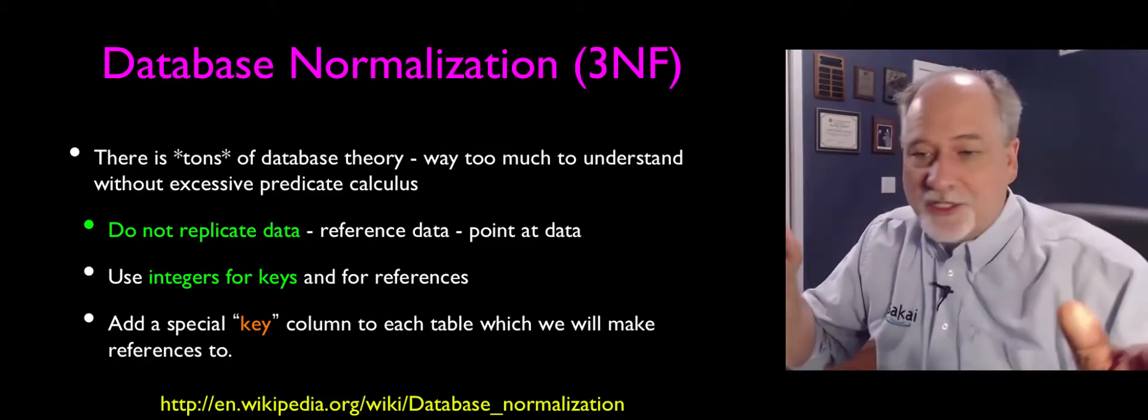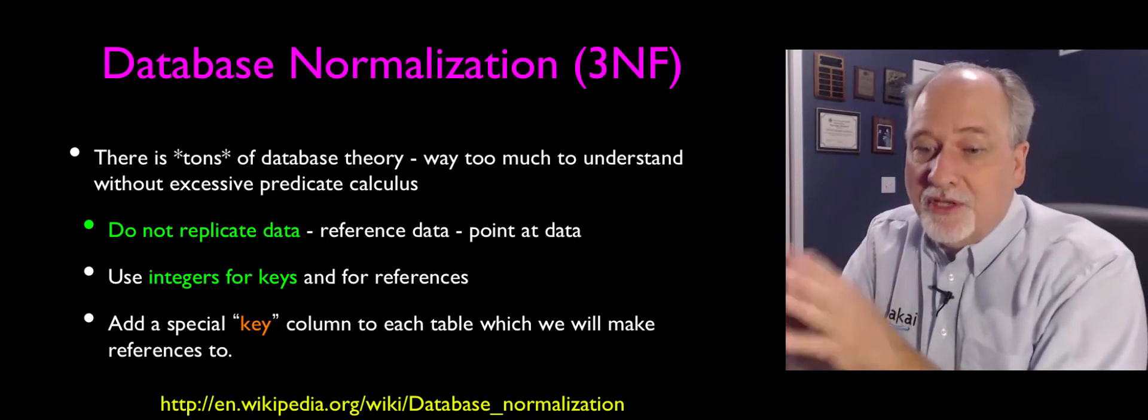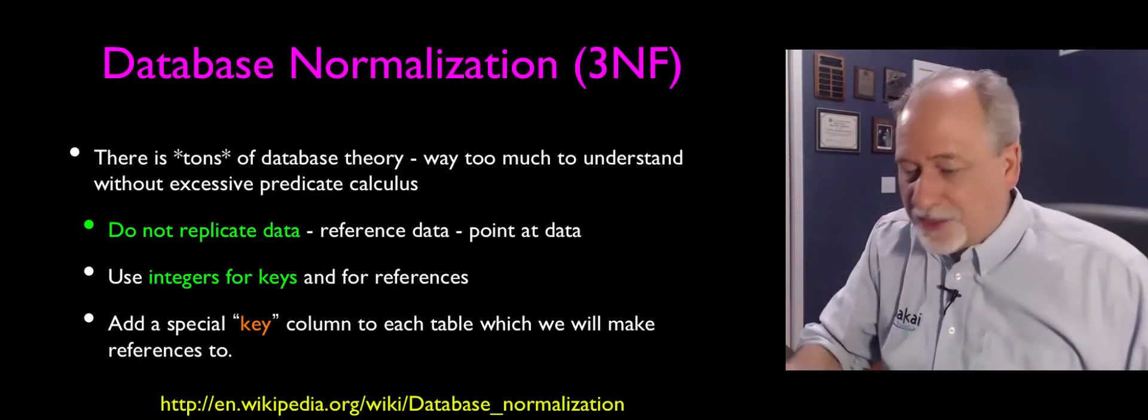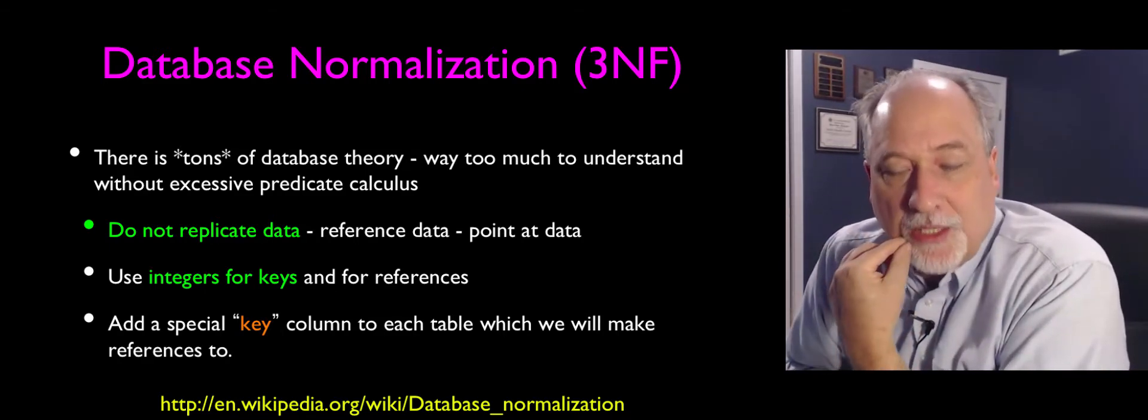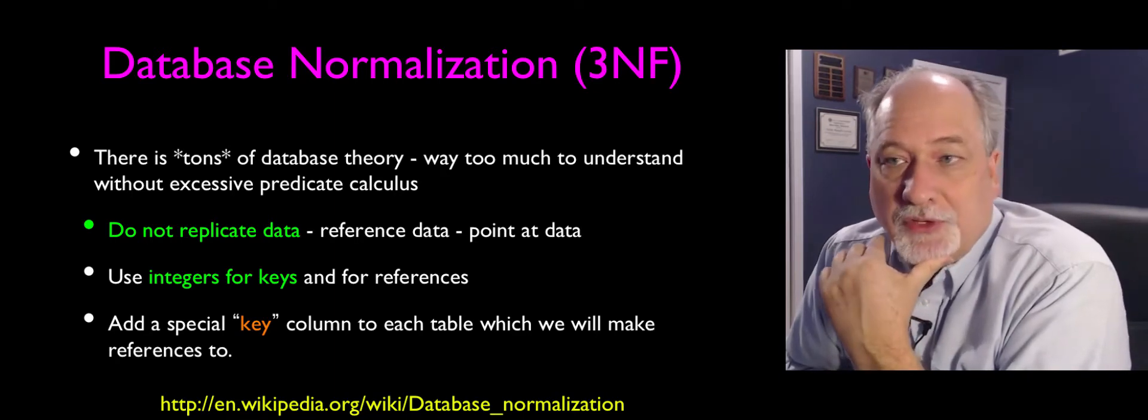Anywhere we want to put, this belongs to Charles Severance, this comment came from Charles Severance, Charles Severance ends up with a number, 12. And then we put 12, 12, 12, 12, 12, instead of Charles Severance, Charles Severance, Charles Severance. And so we don't replicate string data. We reference the data, we point at it, and we use integer numbers for this.